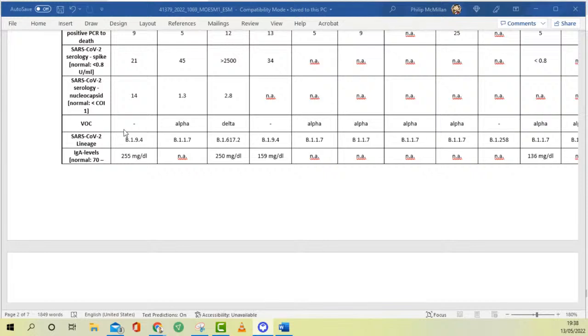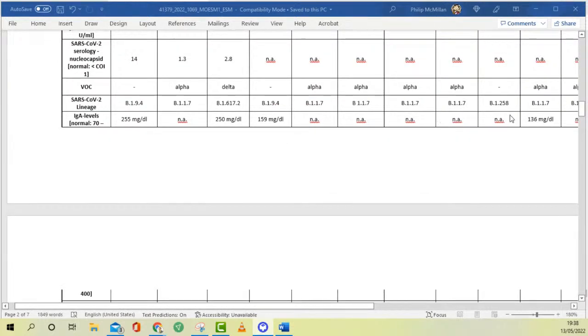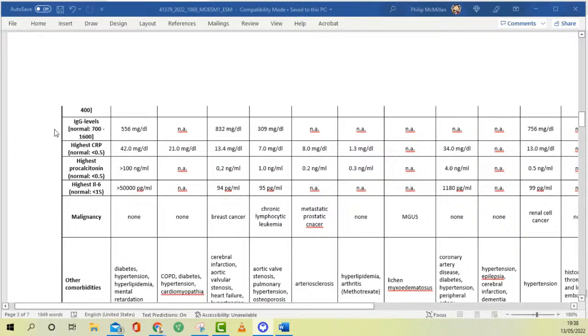Variant of concern, Alpha Delta. So this was early last year. This autopsy series was done over a period of time, and it does take time to do them. However, this kind of information should really have been expedited. SARS-CoV-2 lineage here, they're talking about which virus or variant it is. And IgA levels, I'll look into what the relevance of this is. And then the IgG levels.